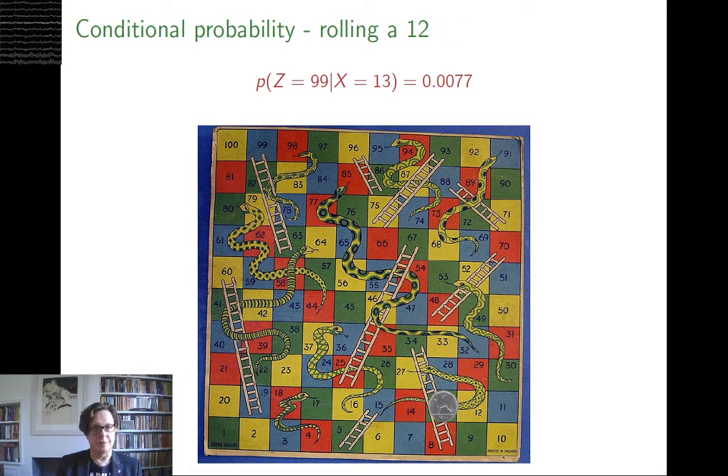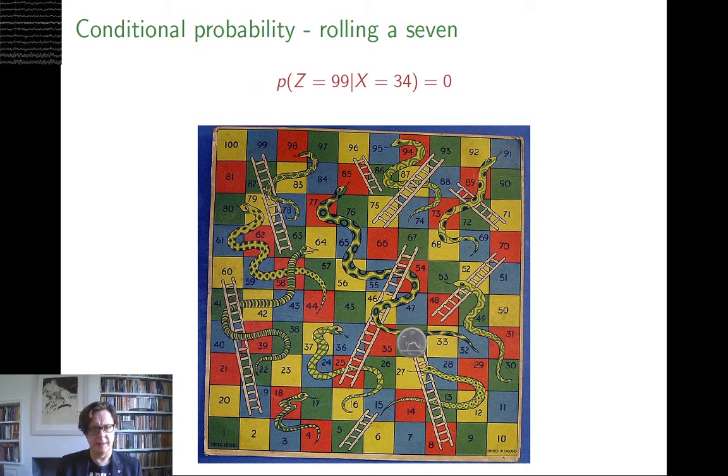But if your first roll was a 12, you end up with a pretty good chance, well, not a pretty good chance, but a much better chance of getting to the 99. It's 0.0077, almost 0.8% chance. And as an extreme example, if you rolled a 7 at the start, you'd end up at 34. And once you're there, although in some ways, that's quite a good move, it gets you quite far along the board, it makes it impossible to get to 99 in two more rolls.